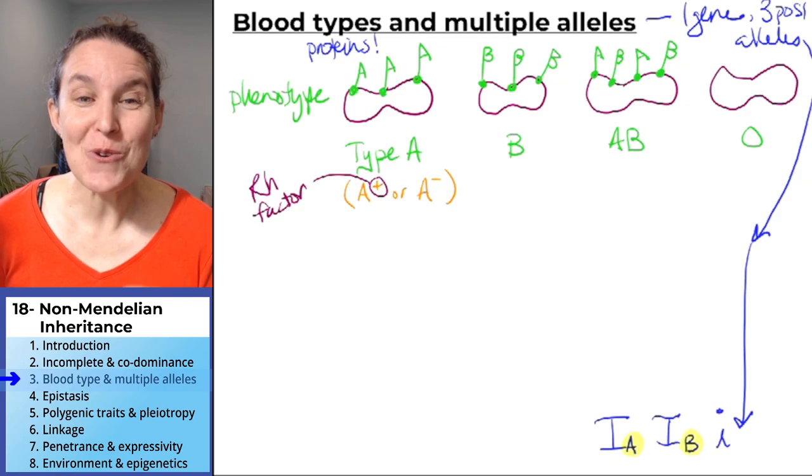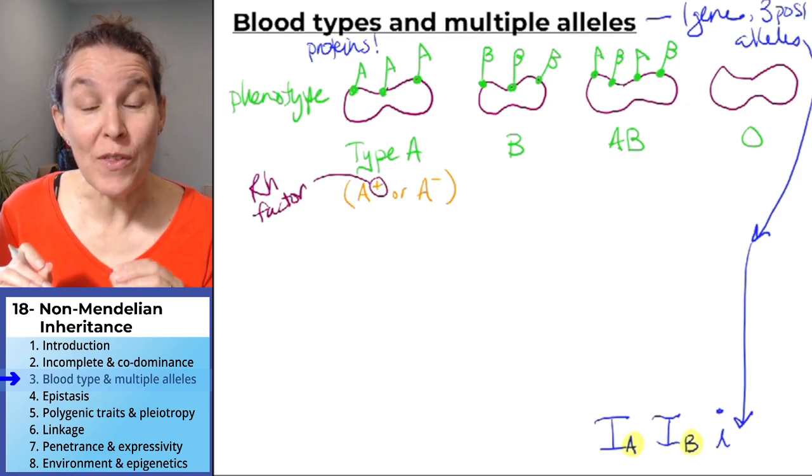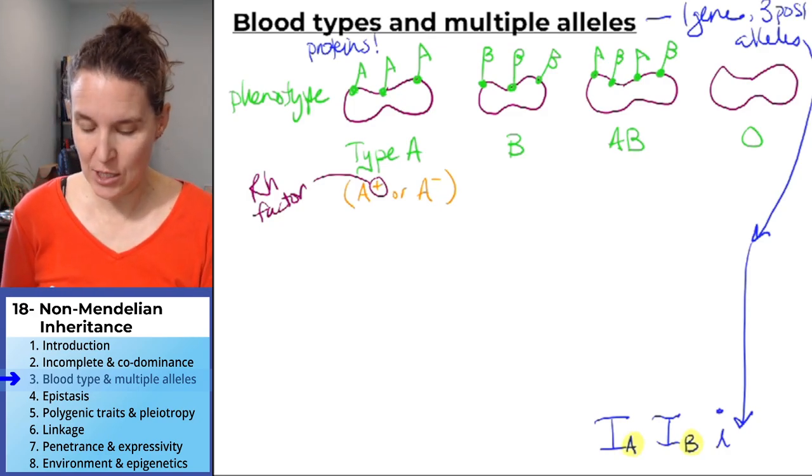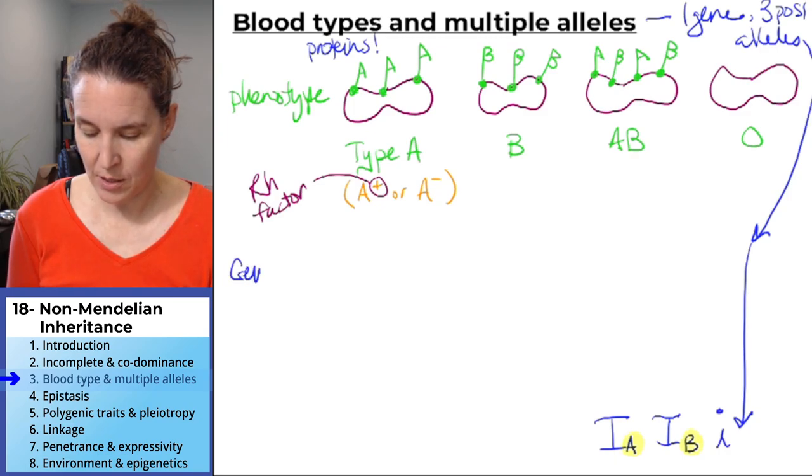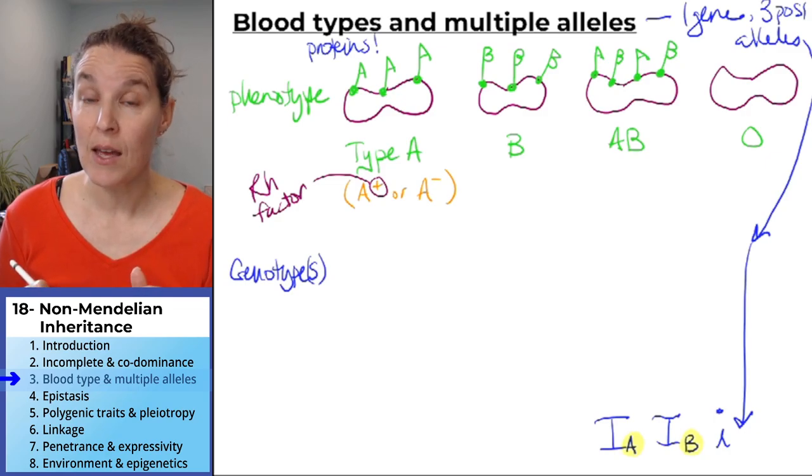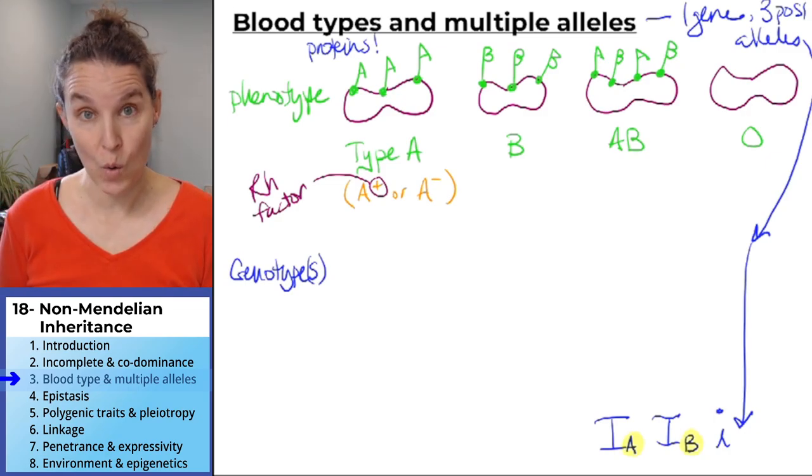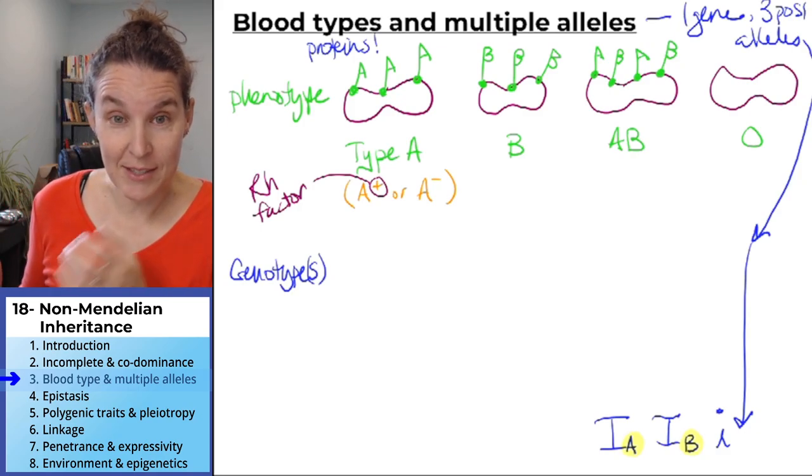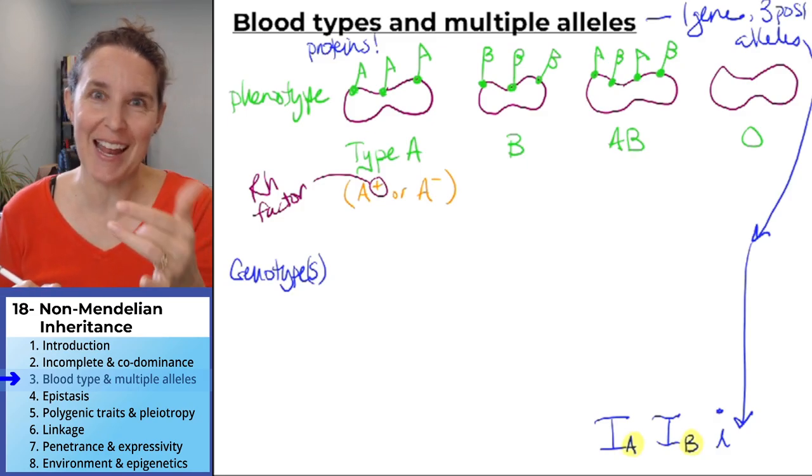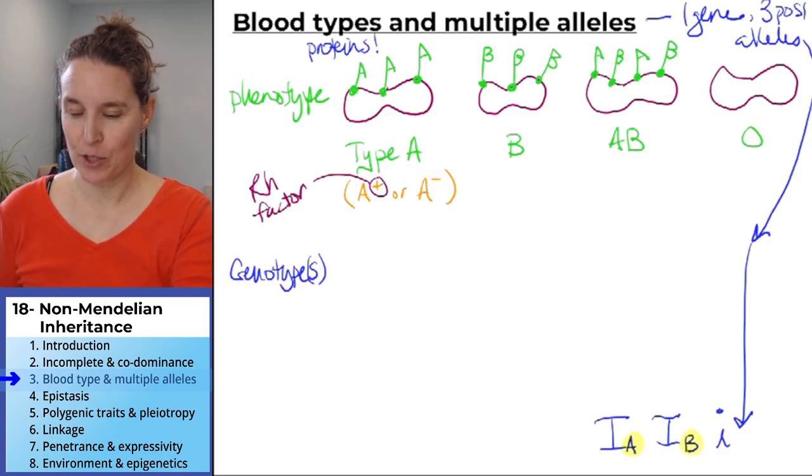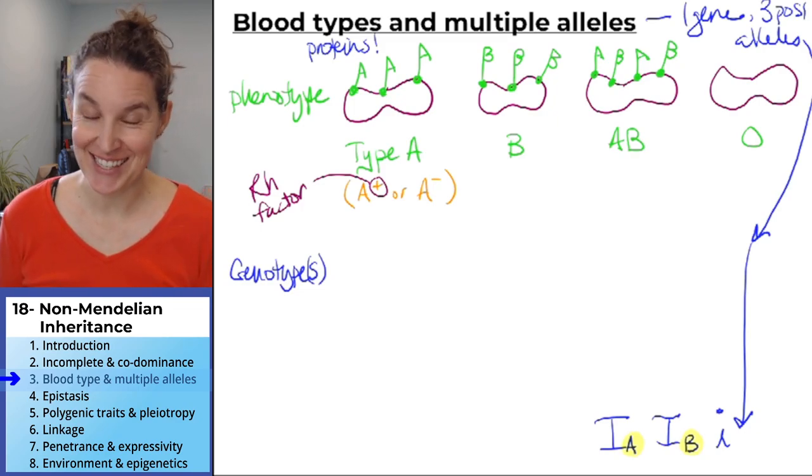Now, push pause. You can totally do this. Predict the possible genotypes that give rise to each one of these phenotypes. So I'm going to make you a chart. Genotypes. Because there's going to be multiple genotypes. And once we do the genotypes, you will see how this is actually an example of co-dominance. I gave it away. We do have multiple alleles. That's what we're talking about today. But you'll see anyway, the co-dominance part. Okay. Guess the genotypes. You pushed pause. Now you're going to check yourself and see if you're right.